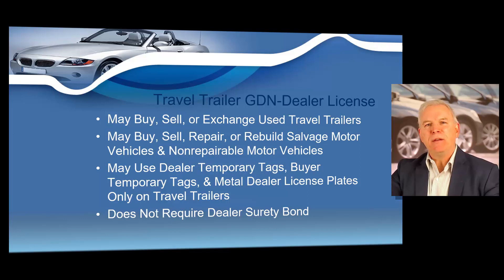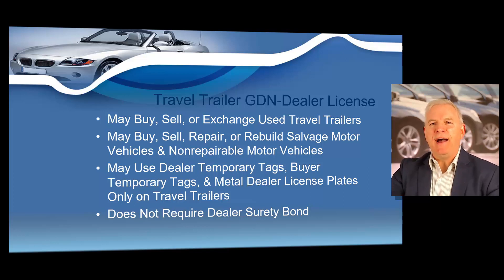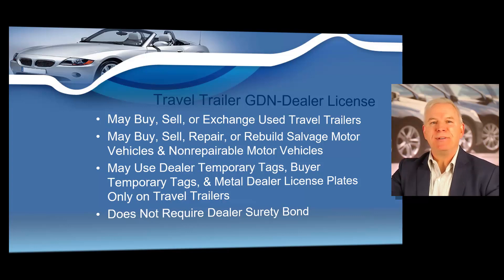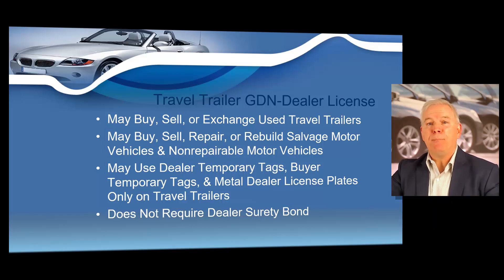A travel trailer GDN allows you to buy, sell, or exchange used travel trailers. A travel trailer is defined as a house trailer type vehicle or camper trailer that is a recreational vehicle, less than eight feet six inches in width or 45 feet in length, designed primarily for temporary living quarters in connection with recreational camping, travel, or seasonal use. It is not a permanent dwelling, and not a utility trailer, enclosed trailer, or other trailer without human habitation as its primary function. This license allows you to use dealer temporary tags, buyer temporary tags, and metal dealer license plates only on travel trailers. This type of license does not require a dealer surety bond.